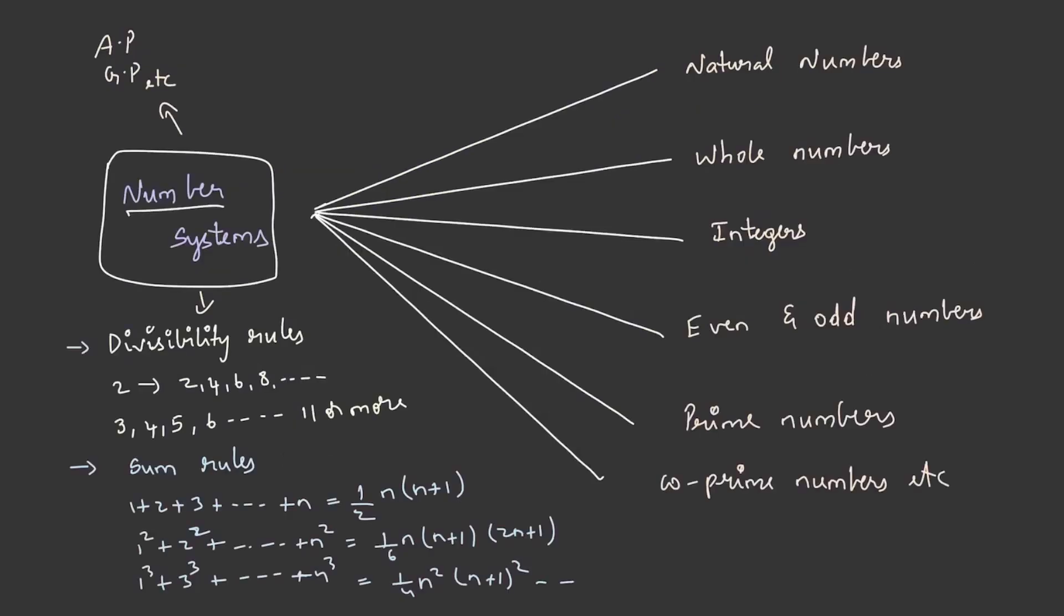Apart from that, you need to have strong command over number systems. That is, you need to know the definitions of natural numbers, whole numbers, integers, even and odd numbers, prime numbers, co-prime numbers, etc. Divisibility rules also play a vital role in simplification problems. How can we say that a number is divisible by 2? If its units digit consists of 2, 4, 6, or any even number as such. Similarly, learn the divisibility rules of 3, 4, 5, 6, so on, up to 11 or even more.